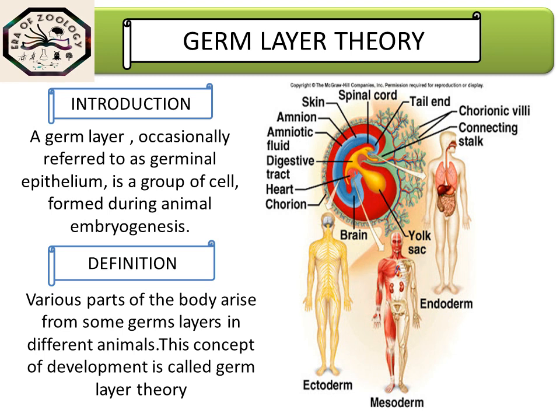The mesoderm has been originated through the developmental process of the embryo. The mesoderm forms the muscular structures like muscle, tendon, and ligament; the skeletal structures like bones and cartilage; the circulatory structures like blood cells and lymphatic vessels; and the excretory structures like kidney, as well as the reproductive structures like testis and ovary.